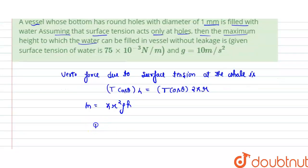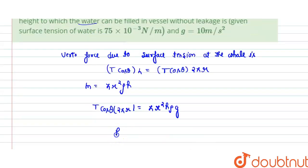So T cos theta into 2πr equals πr²hρg. Therefore, h equals 2T cos theta upon rρg.